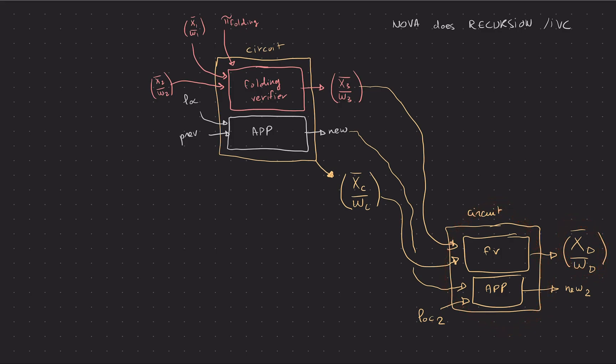But your circuit itself which folds two instances into one is also an instance, and so you can take that instance and what you created and fold these two things again into one here. And so at the very end, when you actually want to prove something, what you'll prove, what you'll get is two instances.